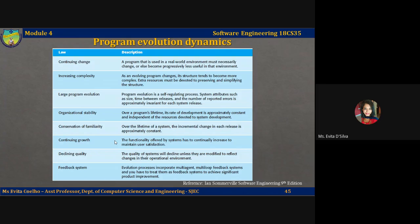The second law, increasing complexity: as an evolving program changes, its structure tends to become more complex. Extra resources must be devoted to preserving and simplifying the structure. The second law states that as a system is changed, its structure degrades. The only way to avoid this happening is to invest in preventative maintenance. You should spend time improving the software structure without adding to its functionality. Obviously this means additional costs over and above those of implementing required system changes.